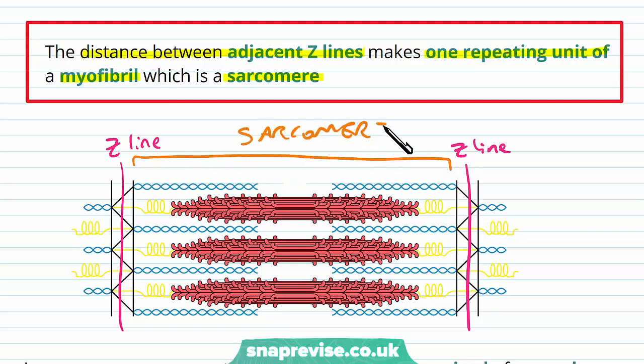And then of course, from this Z line to the next one, there'll be another sarcomere and another one and another one. And that's what the myofibril is made of, lots and lots of lined up sarcomeres.